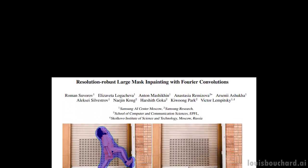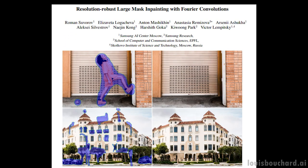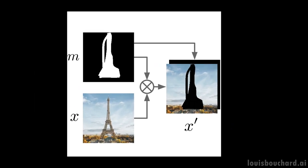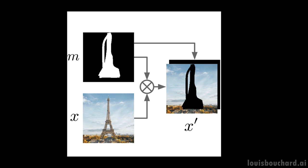These are the main problems the researchers attacked in this paper, and here's how. Roman Suvorov et al. from Samsung Research introduced a new network called LAMA that is quite particular. In image inpainting, you send the initial image as well as what you'd like to remove — called a mask — which covers the image, and the network won't have access to this masked information as it needs to fill in the pixels. It then has to understand the image and try to fill in the pixels it thinks should fit best.